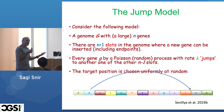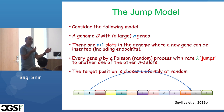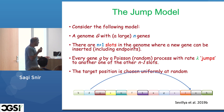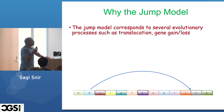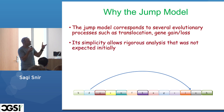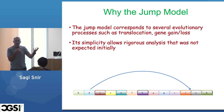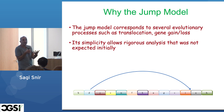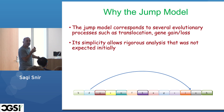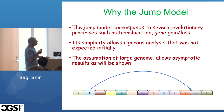Of course, if you tell this to almost anyone, they will say: 'genes do not jump uniformly — they do not choose position uniformly.' The jump model corresponds to several evolutionary processes such as translocation and gene gain/loss. Its simplicity and randomness — the power of randomness now common in computer science and machine learning — allows rigorous analysis that was not expected initially. The assumption of a large genome allows asymptotic results.